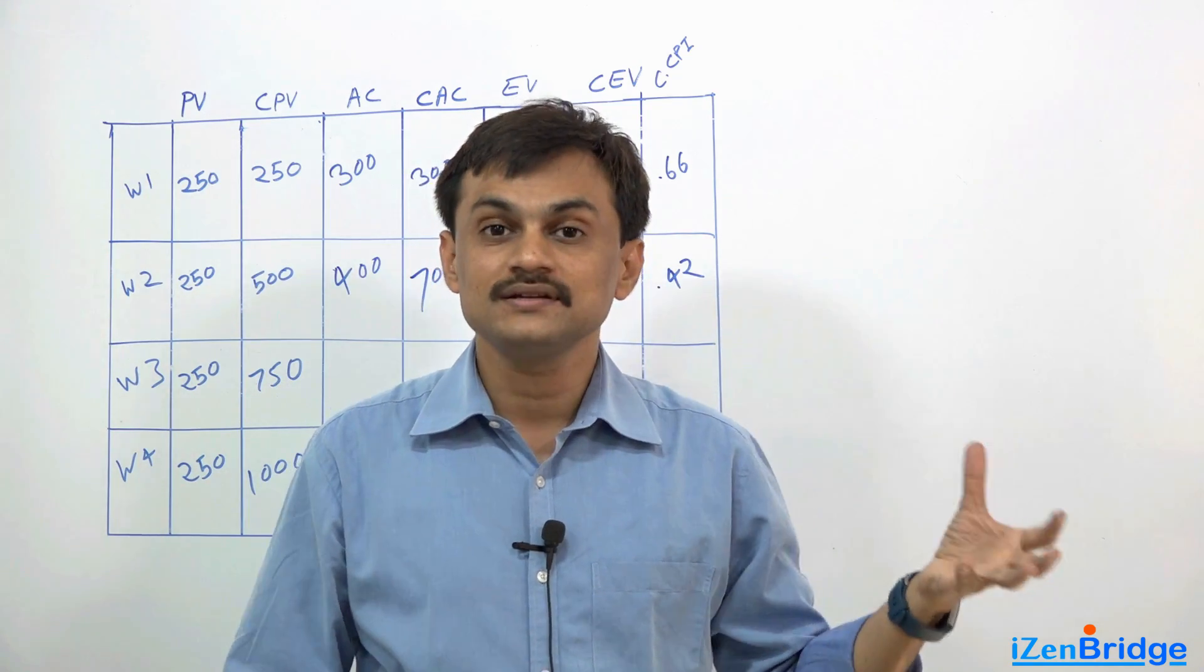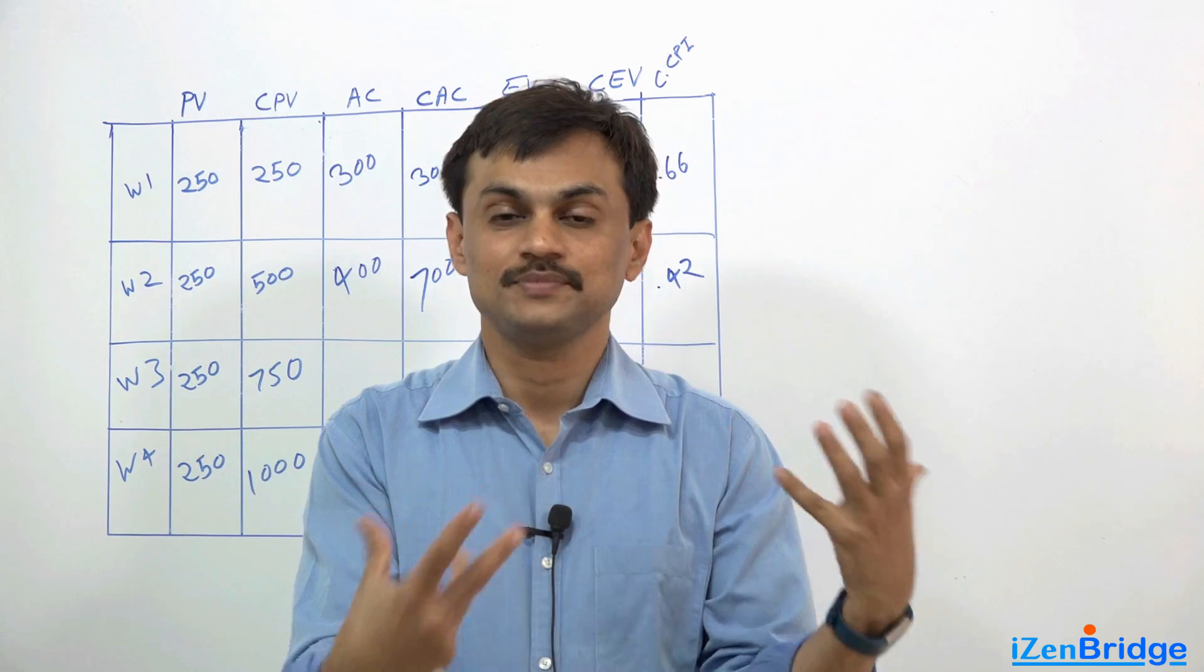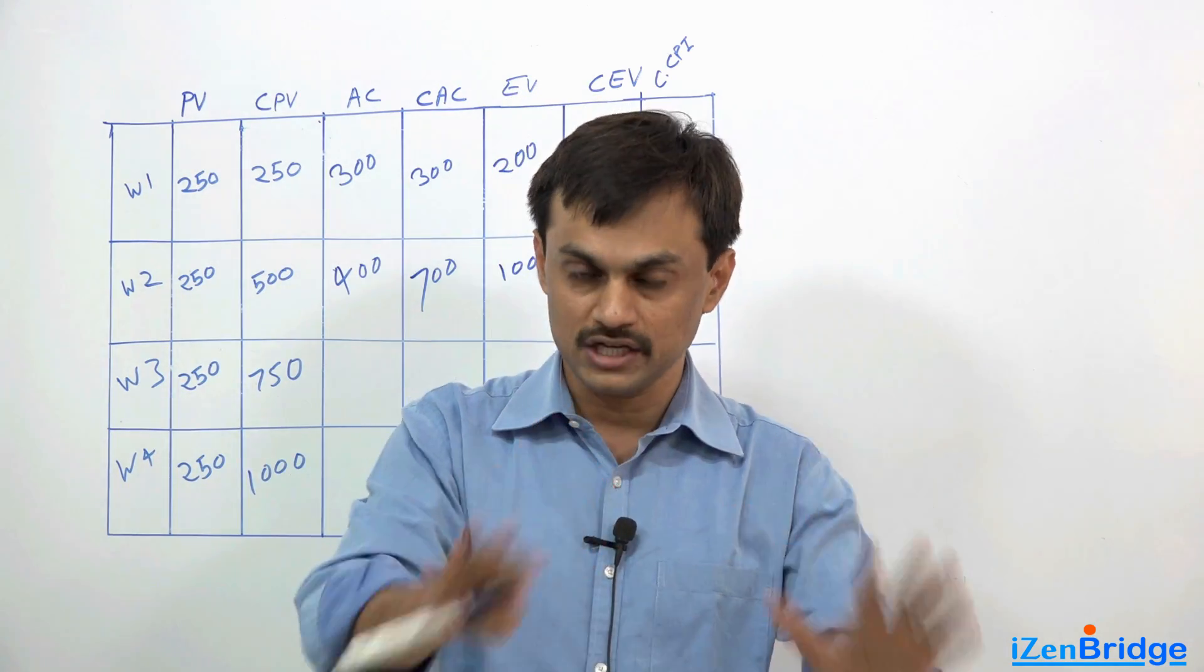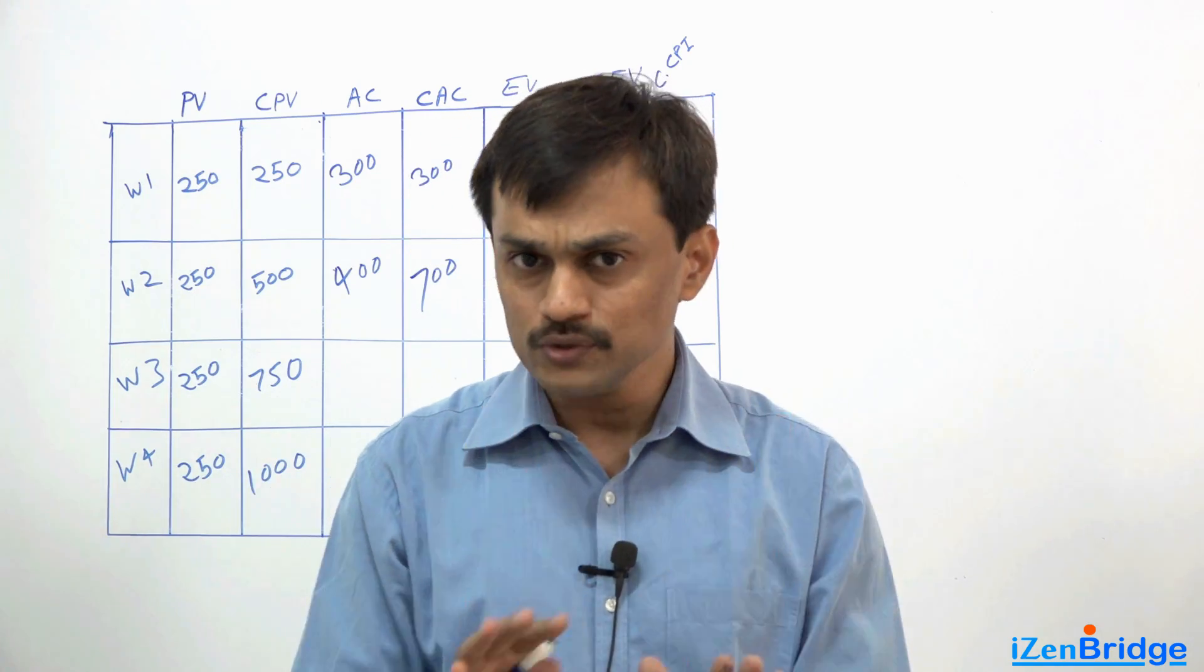To Complete Performance Index equals to 1 shows that we are going everything as per the budget plan. The cost performance index of 1 can achieve it.